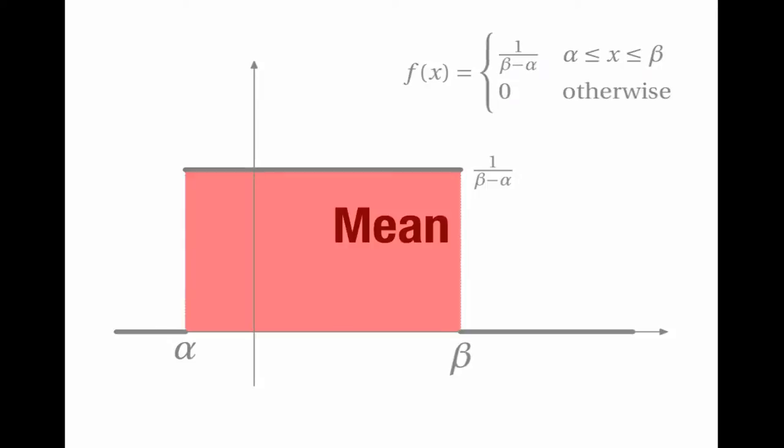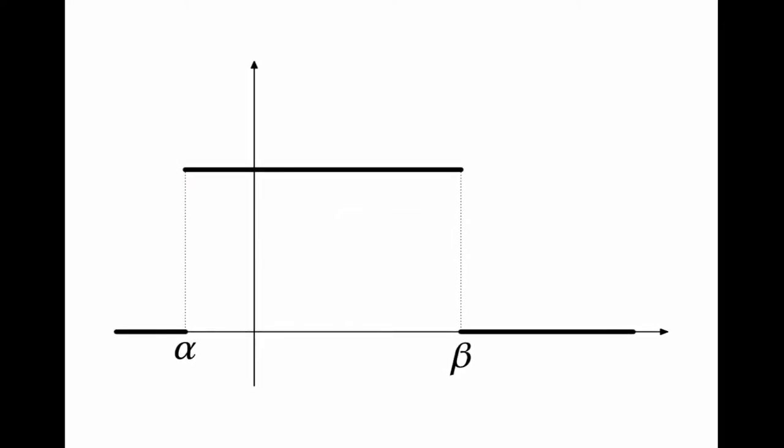The second thing you should understand about the continuous uniform distribution is its mean. If you think about the graph of the probability density function, it's obviously symmetrical, and therefore the mean is bound to be halfway between alpha and beta. So the mean is a half of alpha plus beta, because that's the number halfway between alpha and beta.